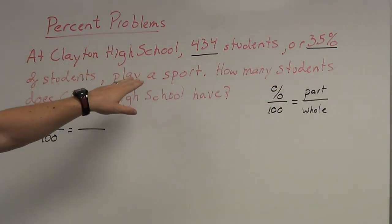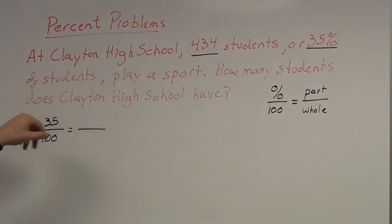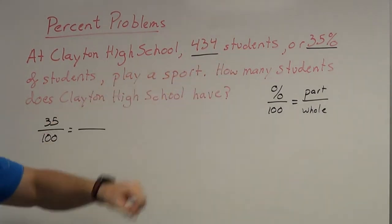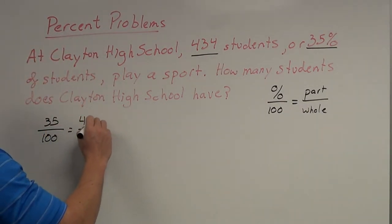At Clayton High School, 434 students play a sport. Notice I skipped what was in the parentheses there. 434 students play a sport. That tells me that's only part of the student body. That's not everything. That's only part of the students. So, as I look at my little formula, that 434 is going to go in the part spot.